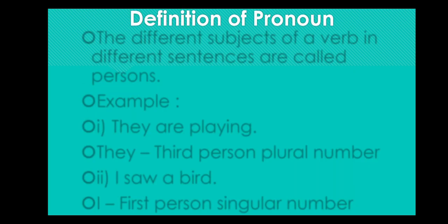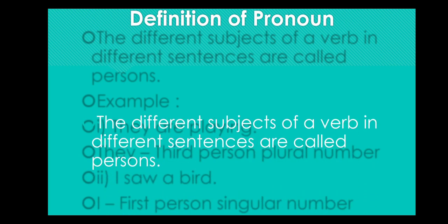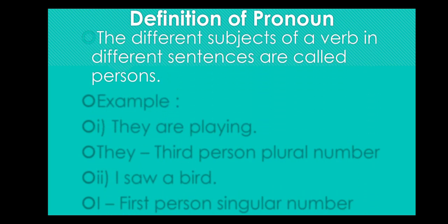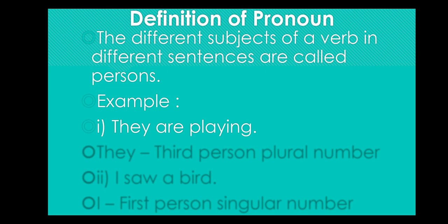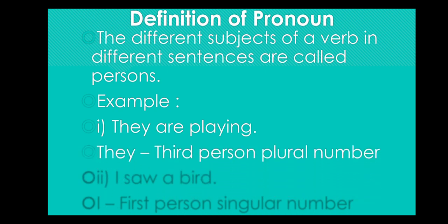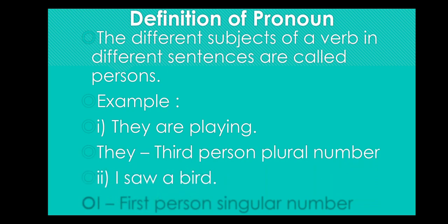You have already learned that the different subjects of a verb in different sentences are called persons. For example, 'They are fair.' Can you say here which one is the subject of the verb 'are'? Yes — 'they.' So 'they' is third person plural number. Similarly, 'I saw a bird.' Here 'I' is the subject of the verb 'saw,' so 'I' is first person singular number.